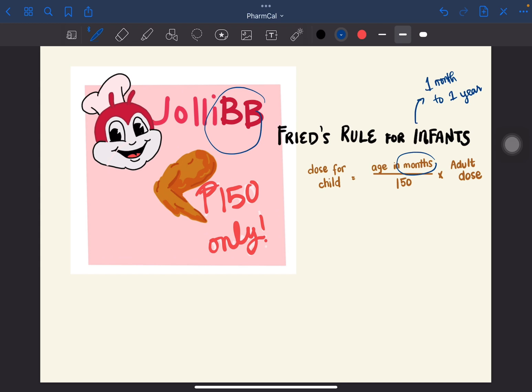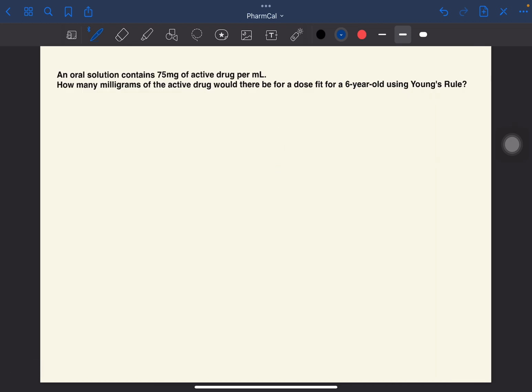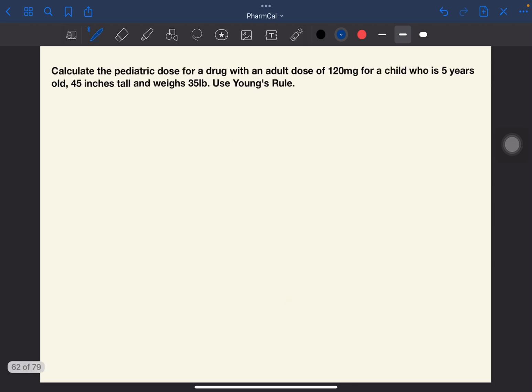Let's go to the practice problems. An oral solution gives 75 mg of active drug per ml. How many mg of the active drug would there be for a dose fit for a 6-year-old using Young's rule? If we recall, the formula for Young's rule is age in years over age plus 12 times the adult dose. Since the child is 6 years old, 6 over 6 plus 12 times 75 equals 25. So that would be 25 mg for the 6-year-old.